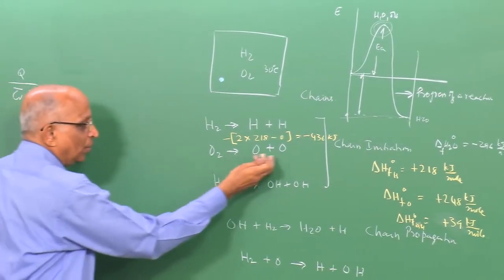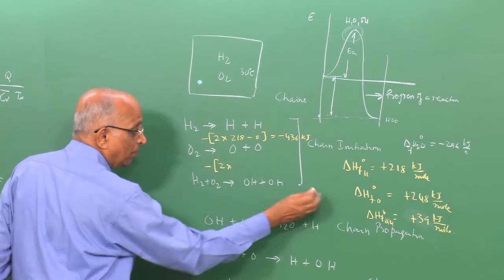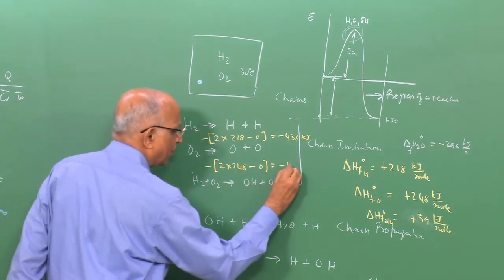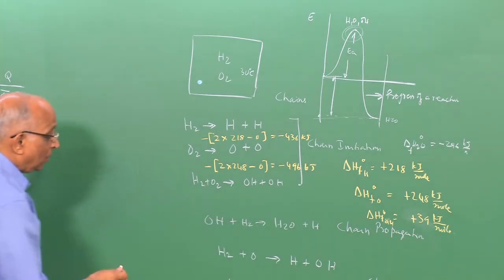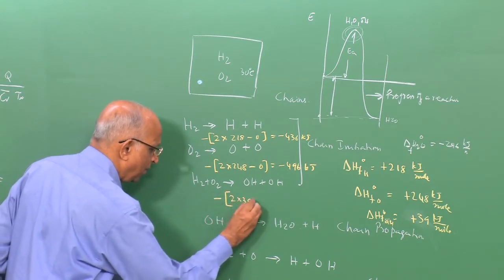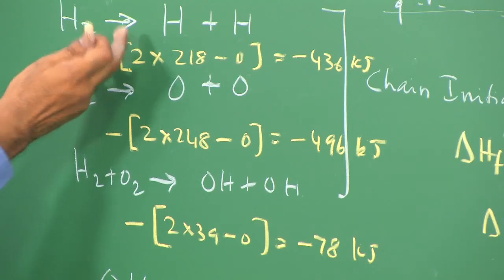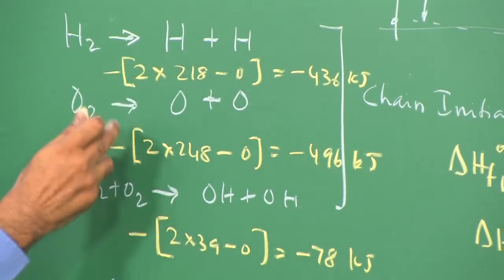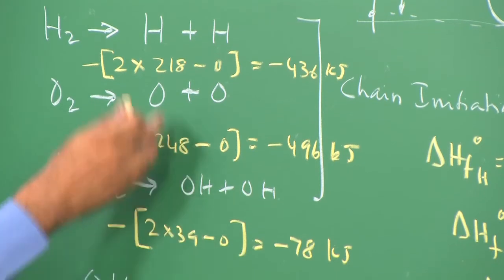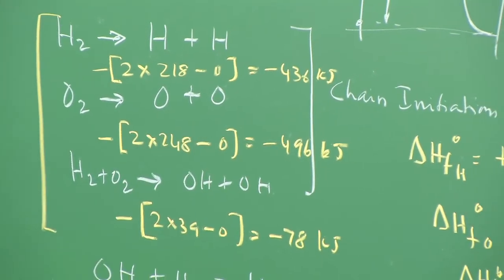For the reaction O₂ → O + O, the heat of reaction is −2×248 − 0 = −496 kJ/mol. For H₂ + O₂ → OH + OH, the heat of reaction is −2×39 − 0 = −78 kJ/mol. So the heat of reaction for H₂ dissociation is −436 kJ, O₂ dissociation is −496 kJ, and OH formation is −78 kJ. These reactions are endothermic — they absorb energy. No heat is liberated in the three chain initiation reactions.